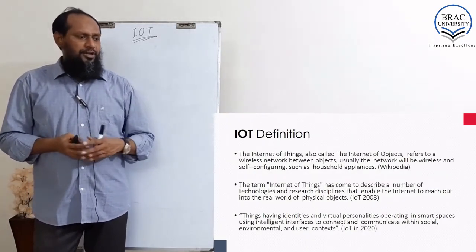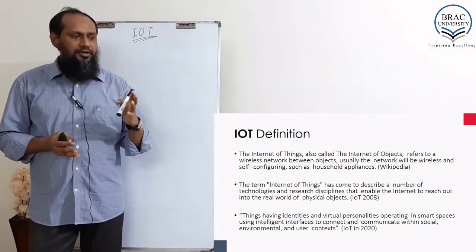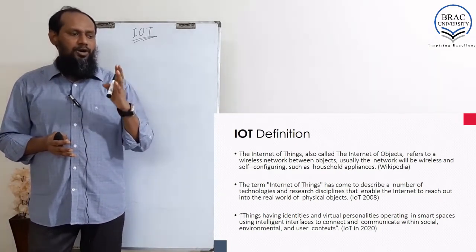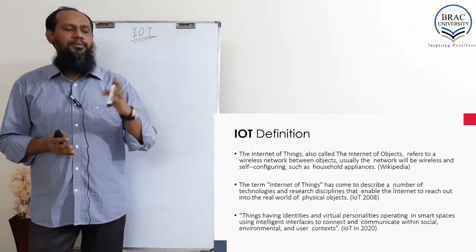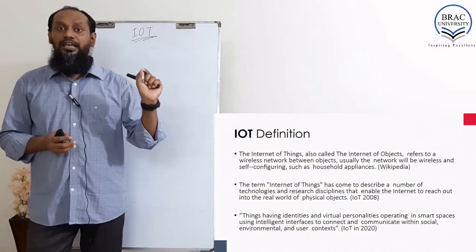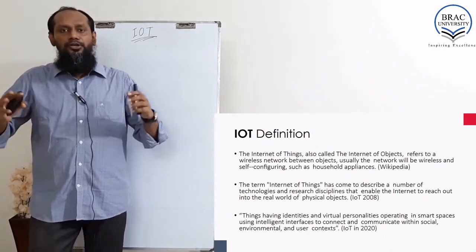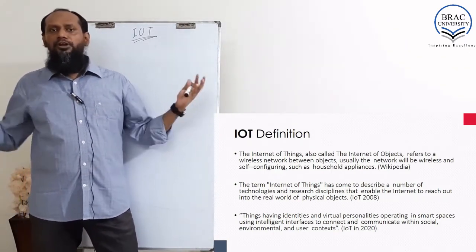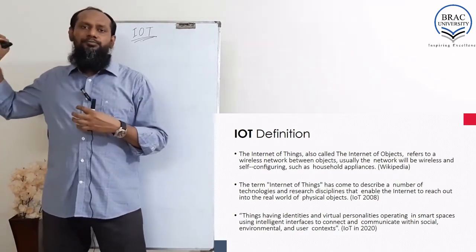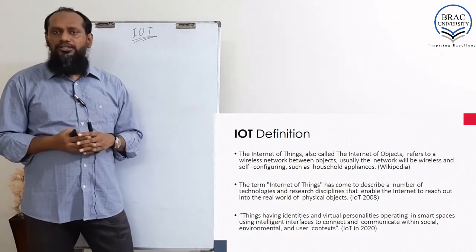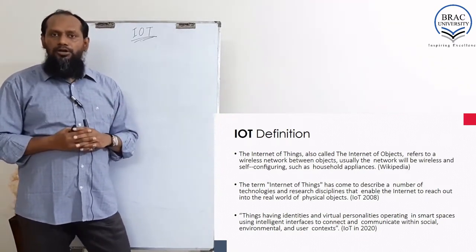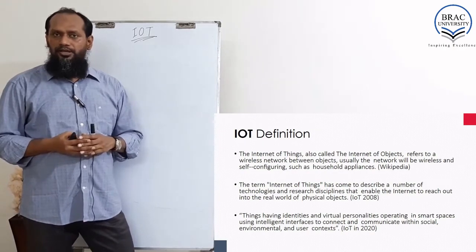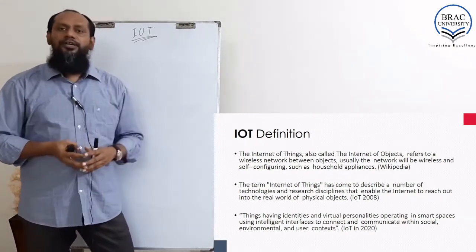Here is a simple definition: The Internet of Things, also called Internet of Objects, refers to a wireless network between objects. Usually the network will be wireless and self-configuring, such as household appliances. Self-configuring means you don't need to configure everything or push any button every time — you configure once and it becomes self-configurable. Like a fire sensor in your kitchen: if an accident occurs, it will automatically call fire services, something like this.